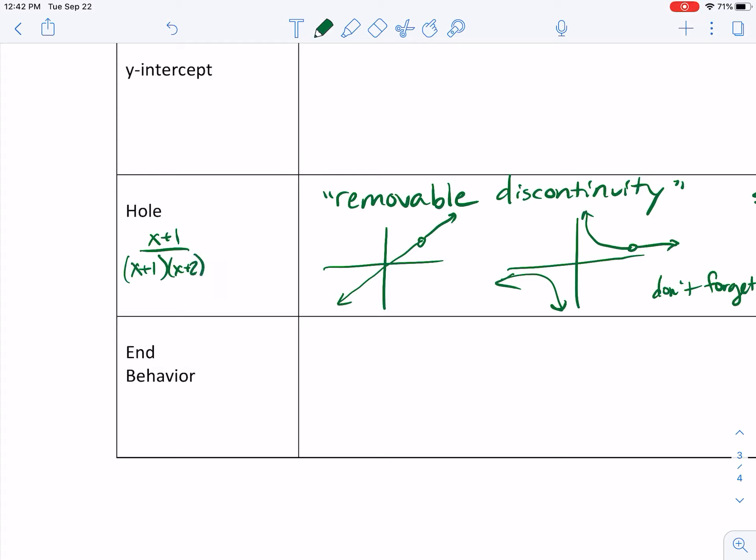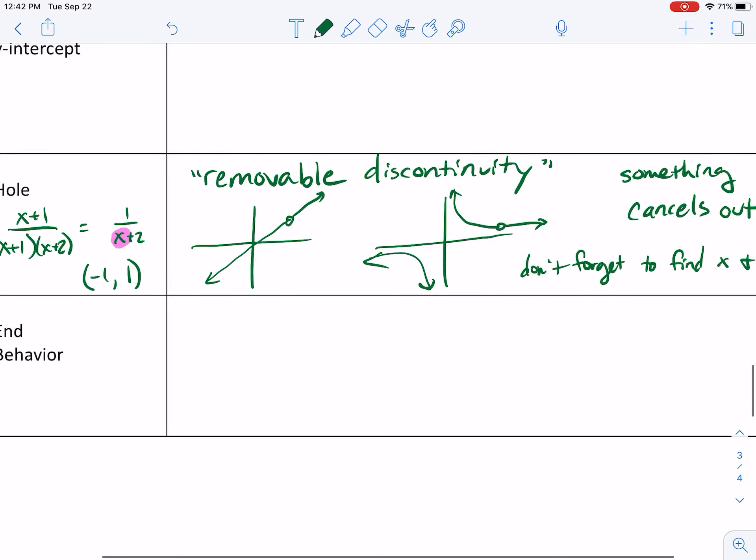Okay, so x will come from what it canceled out, and then to find the y, you have to plug it back into what's already reduced. Okay, so like if I had an x plus 1 over an x plus 1 times an x plus 2, this is going to look like 1 over x plus 2, my hole is at negative 1, when I plug in negative 1 right here, I get 1 over 1, which is just 1, so in this particular case, that hole would be the point negative 1, 0, so you'd have to do something. It would look sort of similar to this, except I forgot to shift.